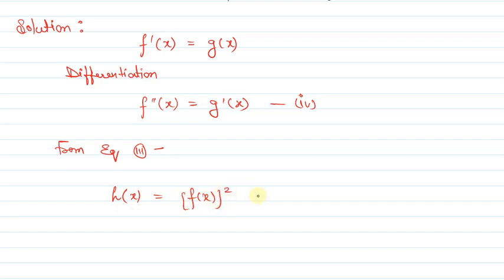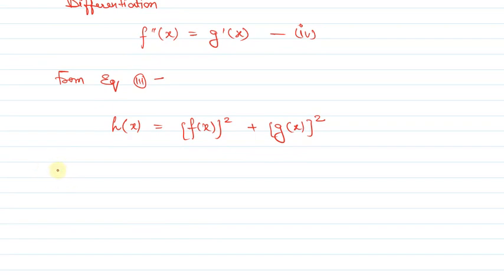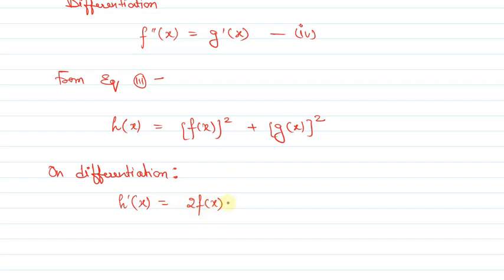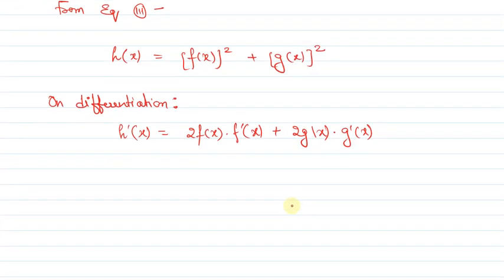From equation 3, h(x) = f(x)² + g(x)². Now let's differentiate h(x). Differentiating, h'(x) = 2f(x)·f'(x) + 2g(x)·g'(x). We know f'(x) = g(x), so we can substitute that in.